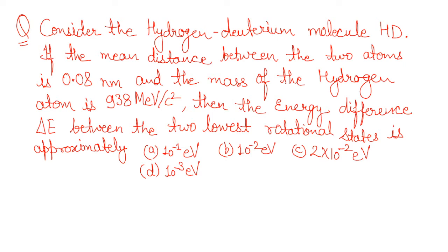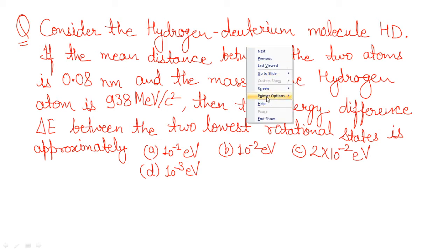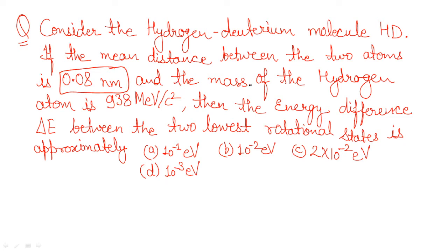Let's talk about this question and the steps you will have to take to solve it. The formulae in this topic are not many, and the questions are quite easy, so you will be able to work on them with some practice. The question is: consider the hydrogen deuterium molecule HD. If the mean distance between the two atoms is 0.08 nanometers, and the mass of the hydrogen atom is given, then the energy difference ΔE between the two lowest rotational states is approximately what?